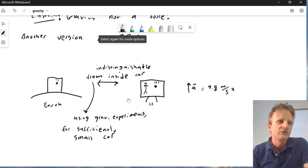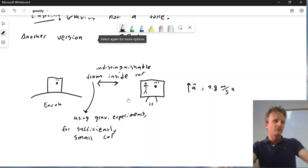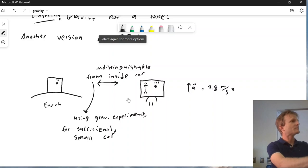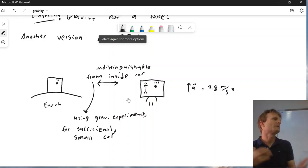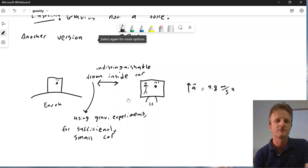So sufficiently small just means whatever experimental precision you think counts as detecting the fact that the masses actually went towards each other, I'll make the car small enough so you can't achieve that experimental precision. It's impossible to detect the presence of gravity by purely local experiments.